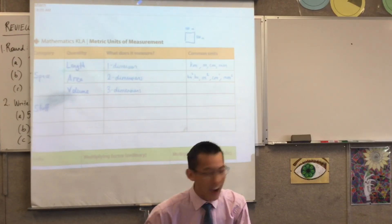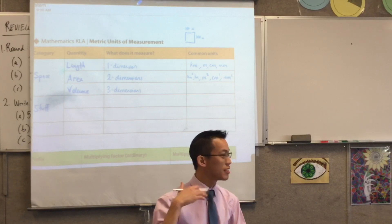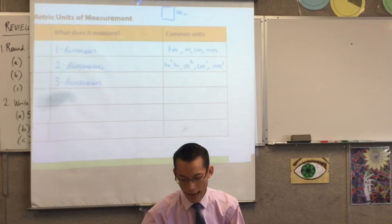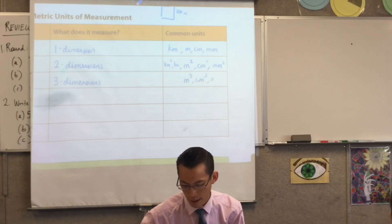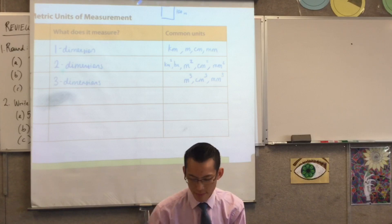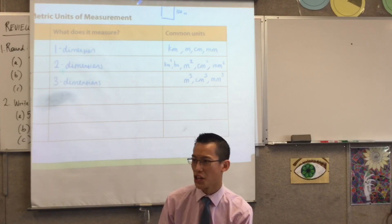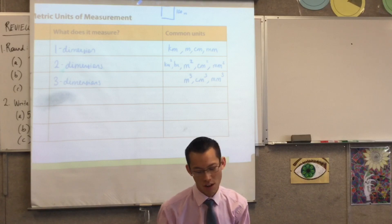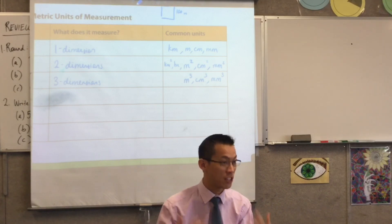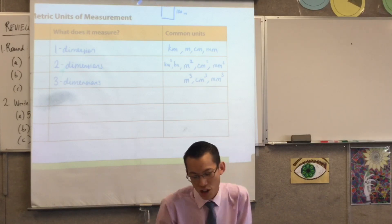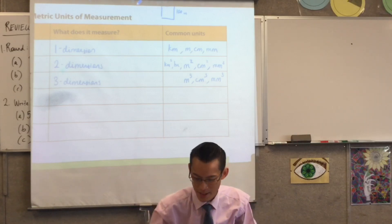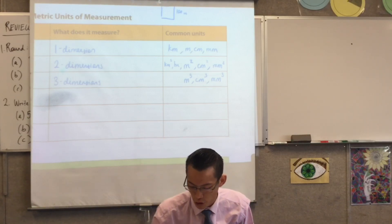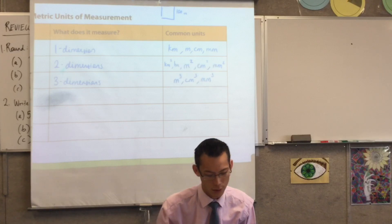Lastly, for three dimensions — again, we're taking the pattern. We have cubic meters, cubic centimeters, and cubic millimeters. In common terms, that's all you're really going to get. You could talk about cubic kilometers but they're massive. So this column is for common things, and that's where I'm going to leave those.